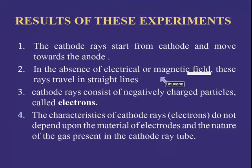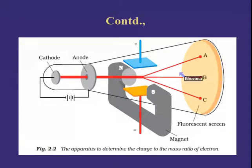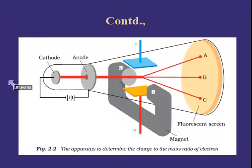In the absence of electric or magnetic field, these rays travel in straight lines. This is proved in the block diagram. When high voltage is applied in the absence of both magnetic and electric fields, they move in a straight line.